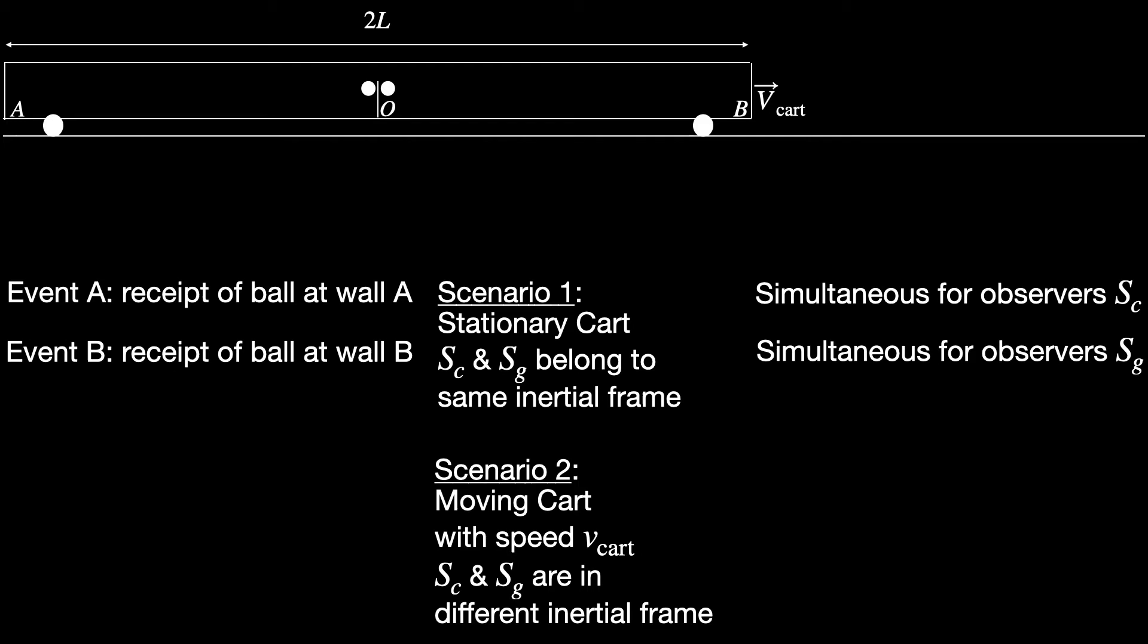For those on board the cart, the situation has not changed at all. They can't feel the uniformly moving cart. For all they know, they are still sitting in the cart looking at the machine set up at the center throwing two balls at speed v0 to the two opposite walls A and B. They will of course observe that events A and B are simultaneous.